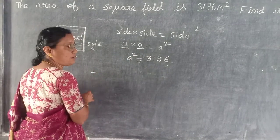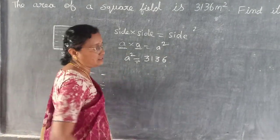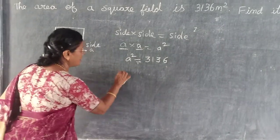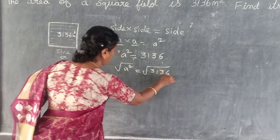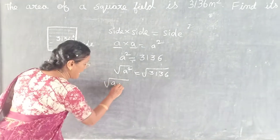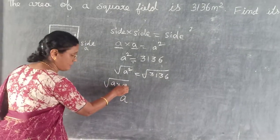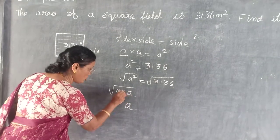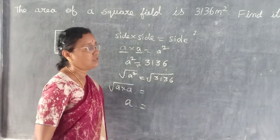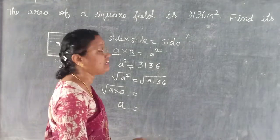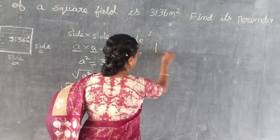This is the opposite operation of square. For addition, what is the opposite? Minus — subtraction. Multiply means divide. For square, square root is the opposite. So root of A squared equals root of 3136. That is root of A into A — out of these two you will take one. There are three ways to find this, but in your book they have given prime factorization method and long division method. First let us go for prime factorization method.